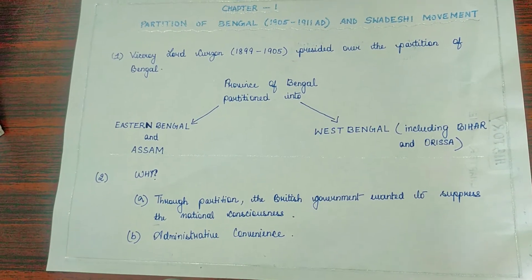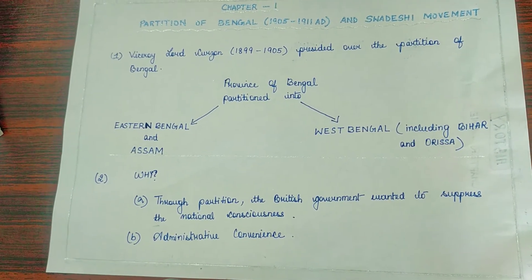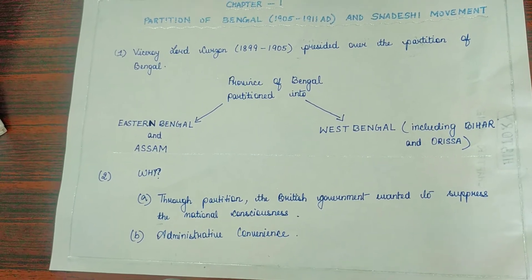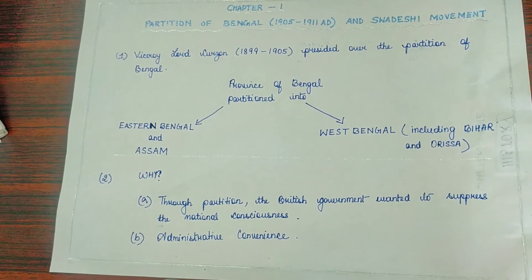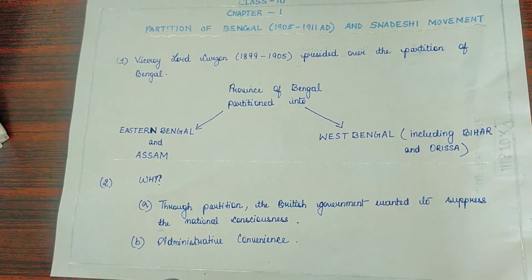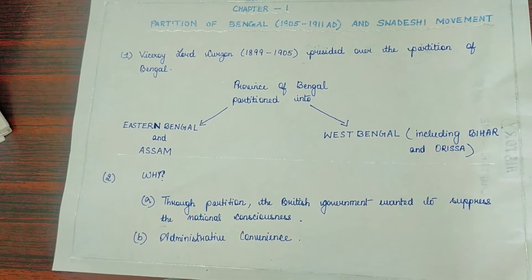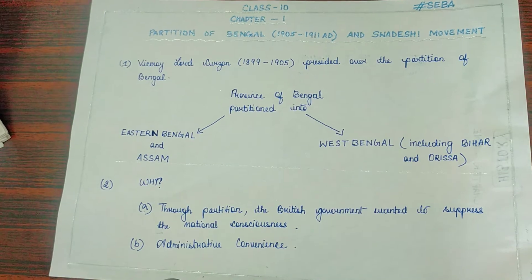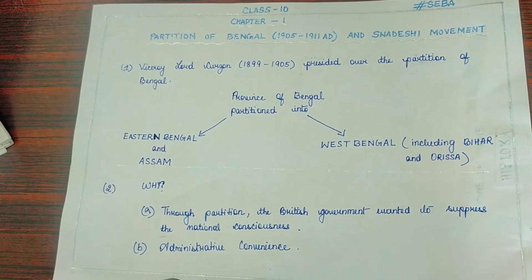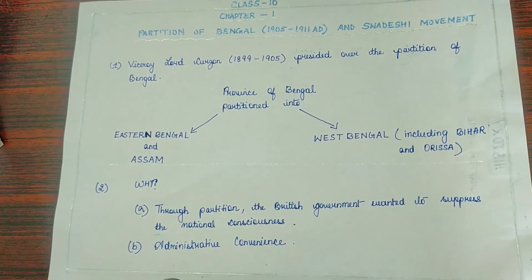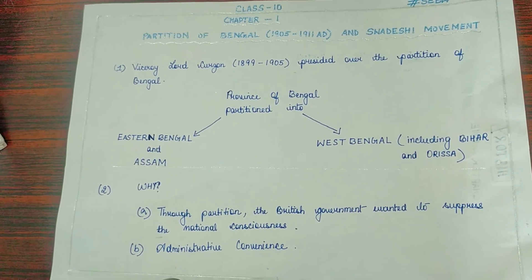What happened was that the province of Bengal was partitioned into Eastern Bengal and Assam on one side, and West Bengal — which included the regions of Bihar and Orissa — on the other side. You need to understand that the province of Bengal was the richest and most fertile region of British India. What we call West Bengal today is just a small part of it. Modern-day Bangladesh, parts of Bihar, and Orissa were all included in the big Bengal province of British India.